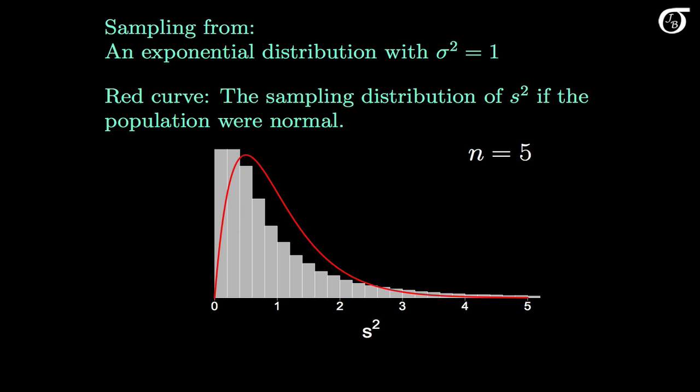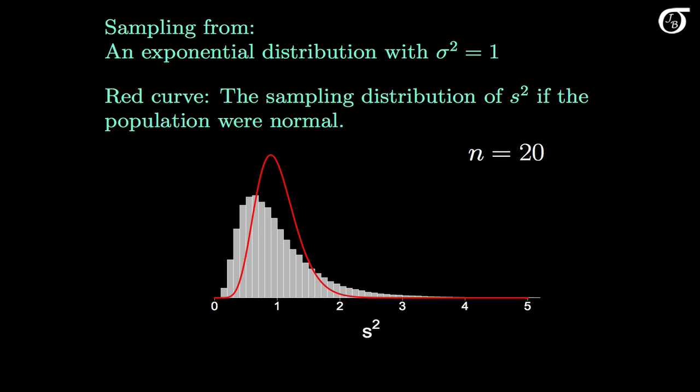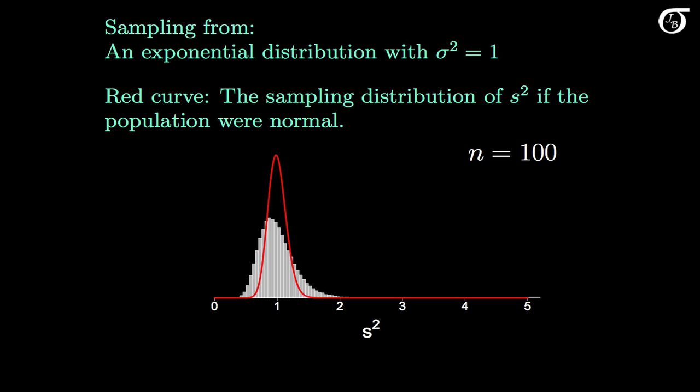The grey histogram is approximately the sampling distribution of the sample variance in this scenario. We can see there are a few more small values of s squared than when sampling from a normal distribution, and also a few more large values. For a sample size of 20, we can see some right skewness in the sampling distribution of s squared, and the grey histogram has more extreme values and greater variability than the red curve — which is the distribution of the sample variance if the population were normal. For a sample size of 100, the grey histogram is looking a little more normal, but still has some right skewness and much greater variability than when sampling from a normally distributed population.